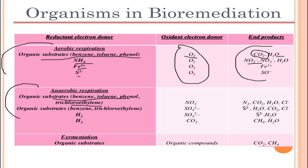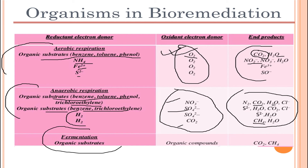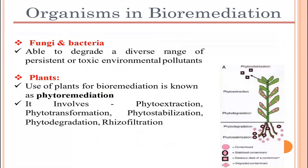In anaerobic respiration, organic substrates can be benzene, toluene, phenol, and trichloroethylene. The key difference is the electron acceptor: aerobic respiration requires only oxygen, whereas in anaerobic respiration other electron donors such as nitrates, sulfates, and carbon dioxide are used instead. End products include CO2, water, chlorine, sulfur, methane, and more. Fermentation is basically an anaerobic process, though it can occur in aerobic conditions too, with end products of carbon dioxide and methane.